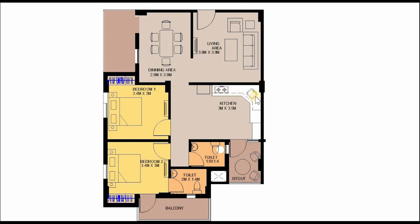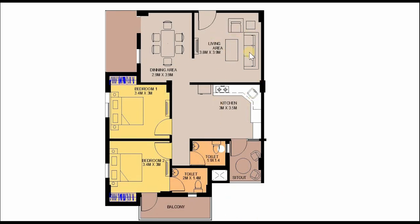The kitchen in this unit is designed in an L shape. There is a common sitout which can also be used as a wash area. In 90 square meters, the spaces can also be arranged in a different manner — this is the most functional and spacious layout design I have selected.